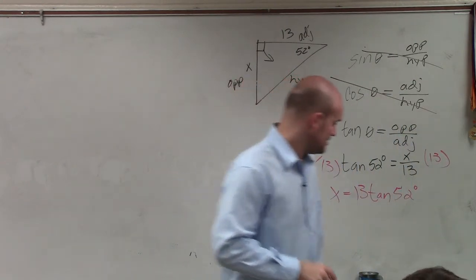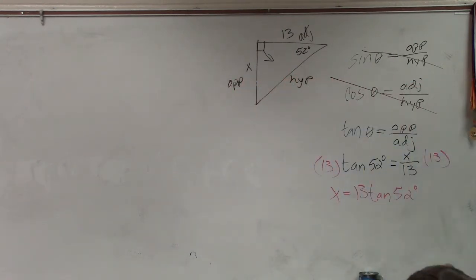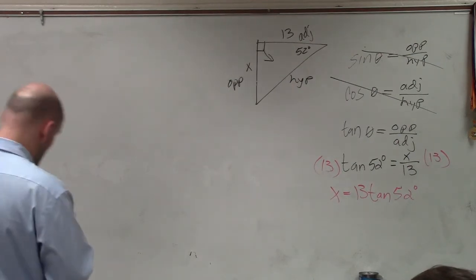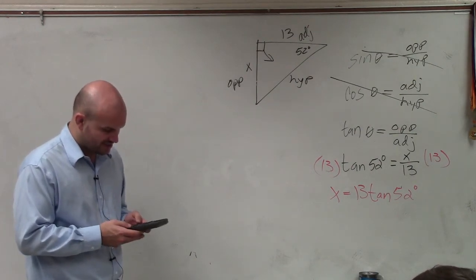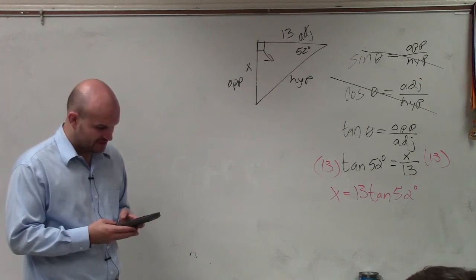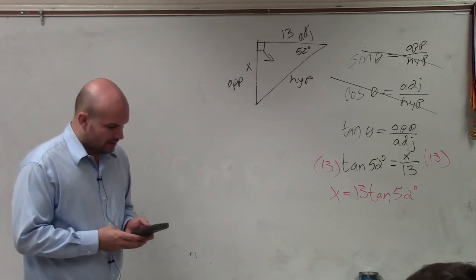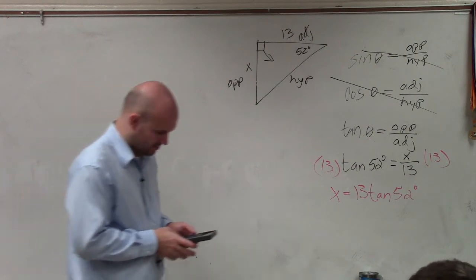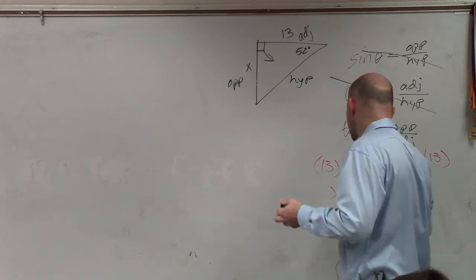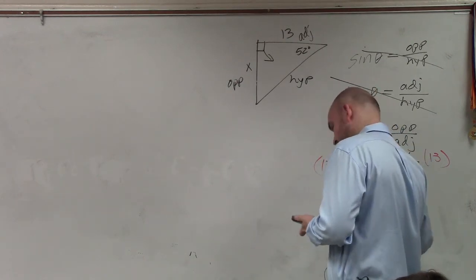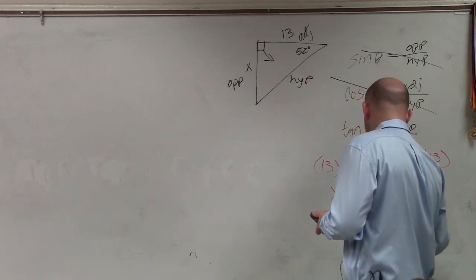So I need to go into my calculator, which somebody stole my calculator again. But I'll go and grab it. So now, I go ahead and plug into my calculator the tangent. Make sure your calculator is in degree mode. If you don't know, make sure you let me know and I'll help you out with that. And then, I just type in 13 times the tangent of 52. And I get 16.639. So I'll round to the hundredth. X equals 16.64.